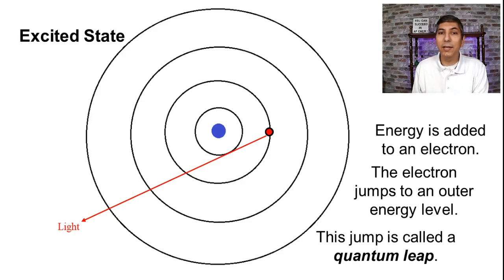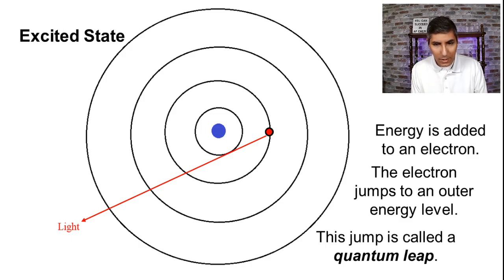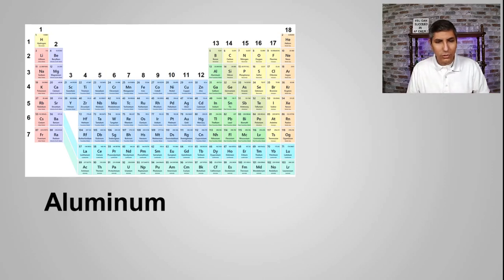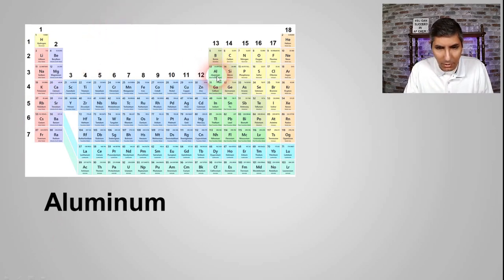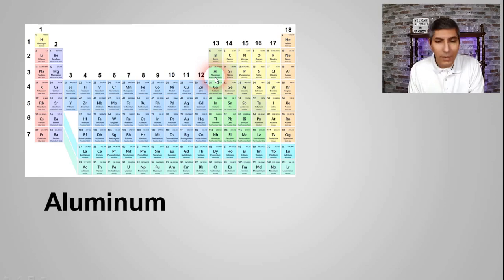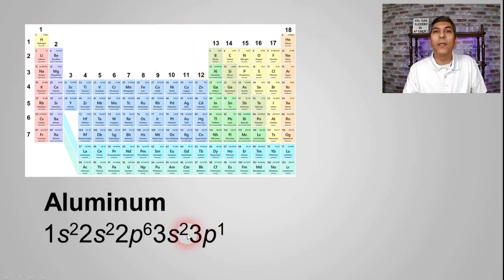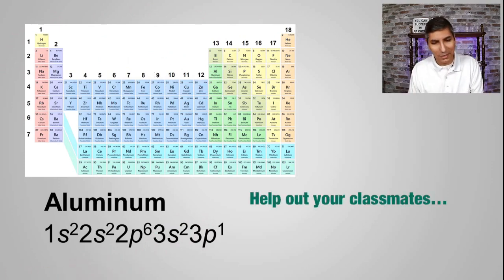We can actually use this to identify elements using something called a flame test, which I hope you have a chance to do in your laboratory. Now let's take a look at a random element from the periodic table — aluminum. We can see where aluminum is on the table. Its electron configuration is 1s2, 2s2, 2p6, 3s2, 3p1. That's the electron configuration for aluminum, or aluminium as you can also say it.